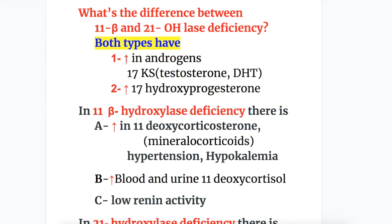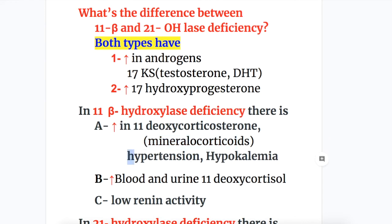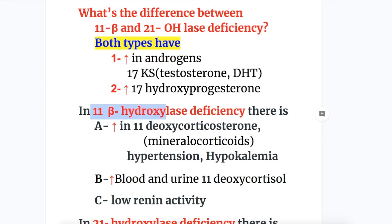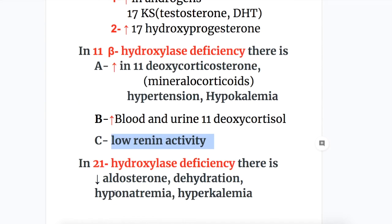What's the difference between 11 beta and 21 hydroxylase deficiency? Both have increased androgens and increased 17-hydroxyprogesterone. In 11 beta hydroxylase deficiency there is increased 11-deoxycorticosterone, a mineralocorticoid causing hypertension and hypokalemia, increased blood and urine 11-deoxycorticosterone, and low renin activity. Whereas in 21 hydroxylase deficiency there is decreased aldosterone production with hyponatremia and hyperkalemia.